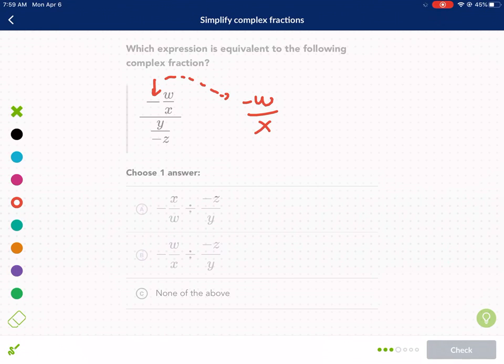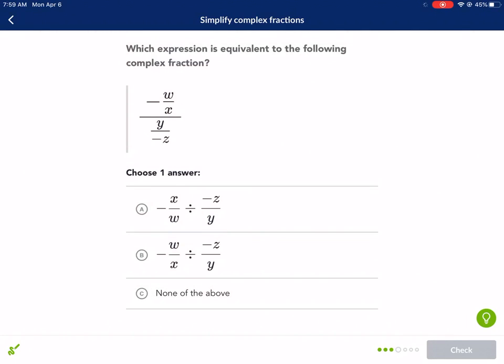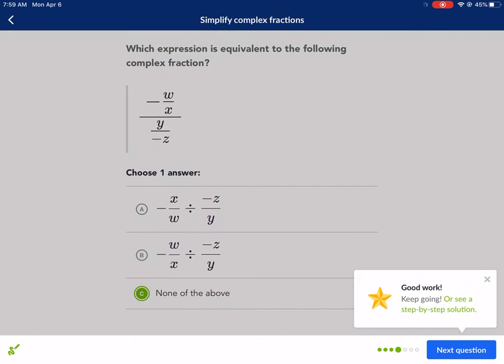Then we have negative divided by y over negative z. And I think it just wants this to identify negative w over x divided by... That doesn't look like any of these. None of those are correct. And that's correct.